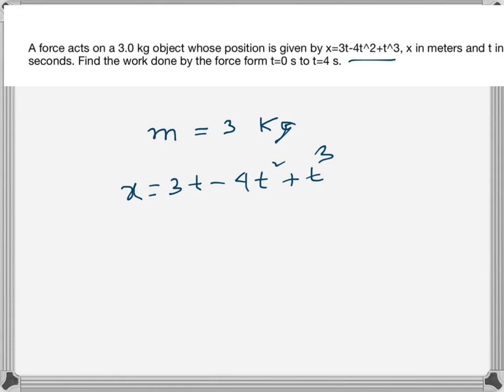Find the work done by the force from t equals 0 to 4 seconds. So what is the work done we need to find? We know work done will be the integral of F dx from 0 to 4. Now we don't know the magnitude of force in Newtons.